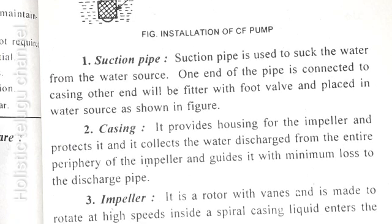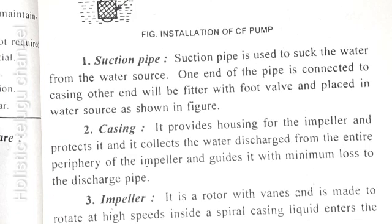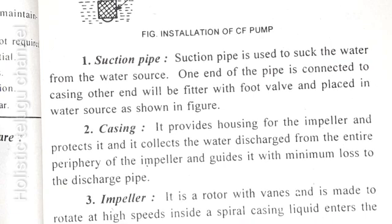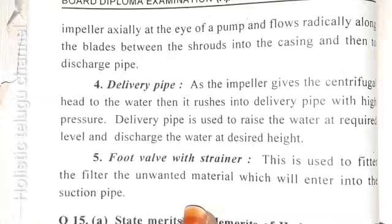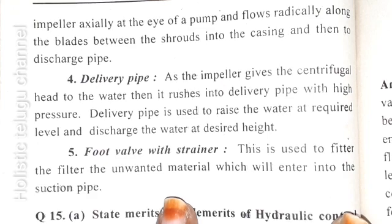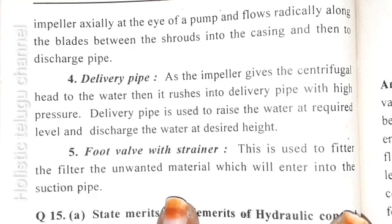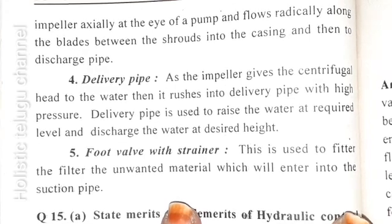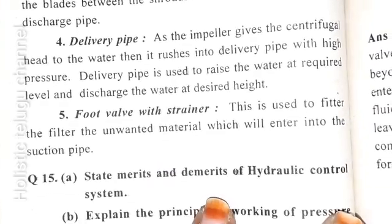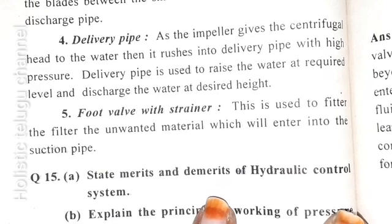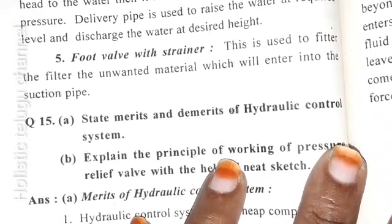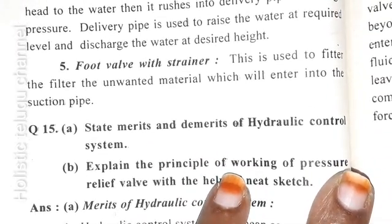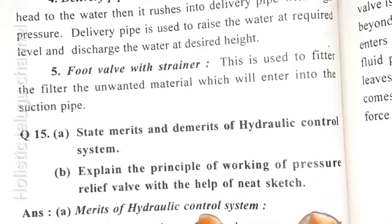Casing: it provides housing for the impeller and protects it. It collects the water discharged from the entire periphery of the impeller and guides it with minimum loss to the discharge pipe. Impeller: it is a rotor with vanes and is made to rotate at high speeds inside the spiral casing. Liquid enters the impeller axially at the eye of the pump and flows radially along the blades between the shrouds into the casing and then into the discharge pipe. Delivery pipe: as the impeller gives the centrifugal head to the water, it rushes into delivery pipe with high pressure. Delivery pipe is used to raise the water at required level and discharge the water at desired height. Foot valve with strainer: this is used to filter the unwanted material which will enter into the suction pipe.